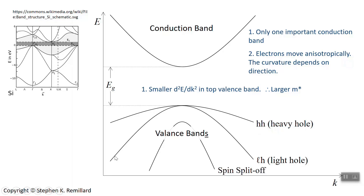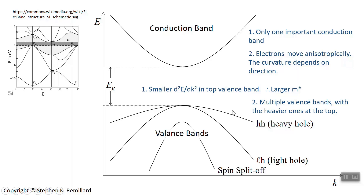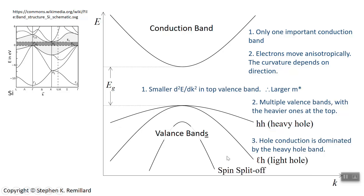The next band has more curvature, which means a lower effective mass — that's why it's called the light hole band. The spin split off band is dropped down by a quantum mechanical effect of spin orbit coupling. So these multiple valence bands have their different effective masses; the higher the valence band, the heavier the mass. If the light hole band had a higher effective mass than the heavy hole band, then it would be above the heavy hole band. The heavy hole band dominates the conduction of holes because it has more states available in it, and therefore will have a larger hole concentration than the light hole band.